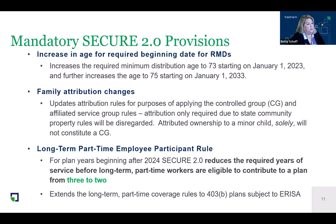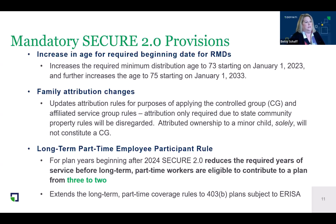There have been changes to the family attribution rules, which mainly affect small employers. Regarding attribution for control group and affiliated service group rules: to the extent attribution is only due to state community property rules, that will be disregarded. For example, if spouses each own 100% of separate businesses in a community property state, they would no longer have to cover each other's employees. The same is true for attribution due to a minor child — that rule has since gone away.